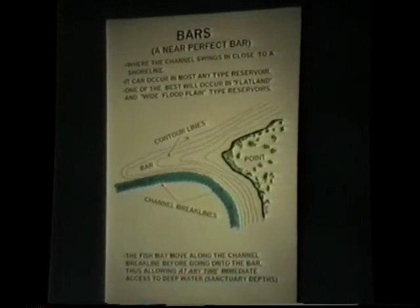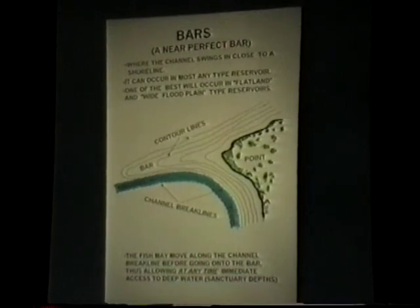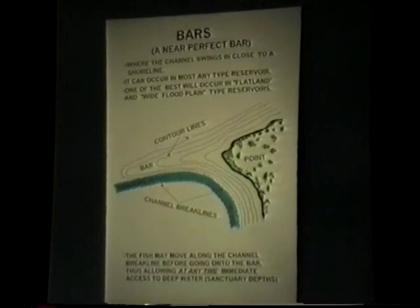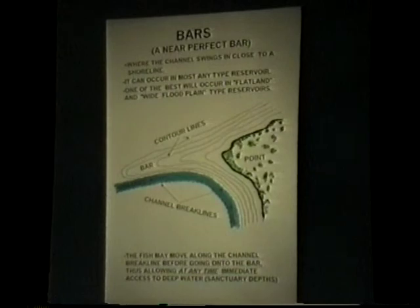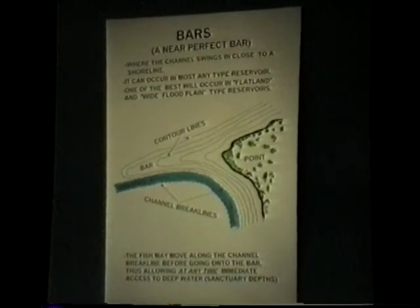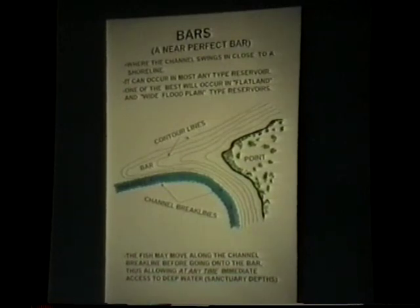As it swung out and went across the reservoir, it created these little short abrupt changes. There may be fingers on the side of that bar. It could have rocks on it, it could have brush on it — it's the old shoreline. So we've got two basic kinds of structures: a big wide-sweeping bar that could be in a reservoir or a natural lake, and this one which pertains to a reservoir.